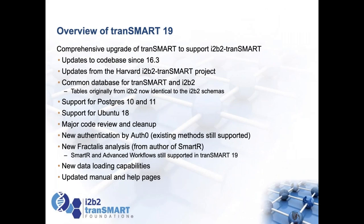Looking at what's new in the release: we're doing a major upgrade to support i2b2 TranSMART, putting in bug fixes and changes since 16.3, but the big thing is code updates from the i2b2 TranSMART project. They didn't just add features from the last six years — they also put in a major effort to clean up the code. An author of one of the O'Reilly books on Grails went through the code and standardized it. We're also supporting the most recent versions of PostgreSQL — now numbered 10 and 11 upwards — and the latest Ubuntu 18.